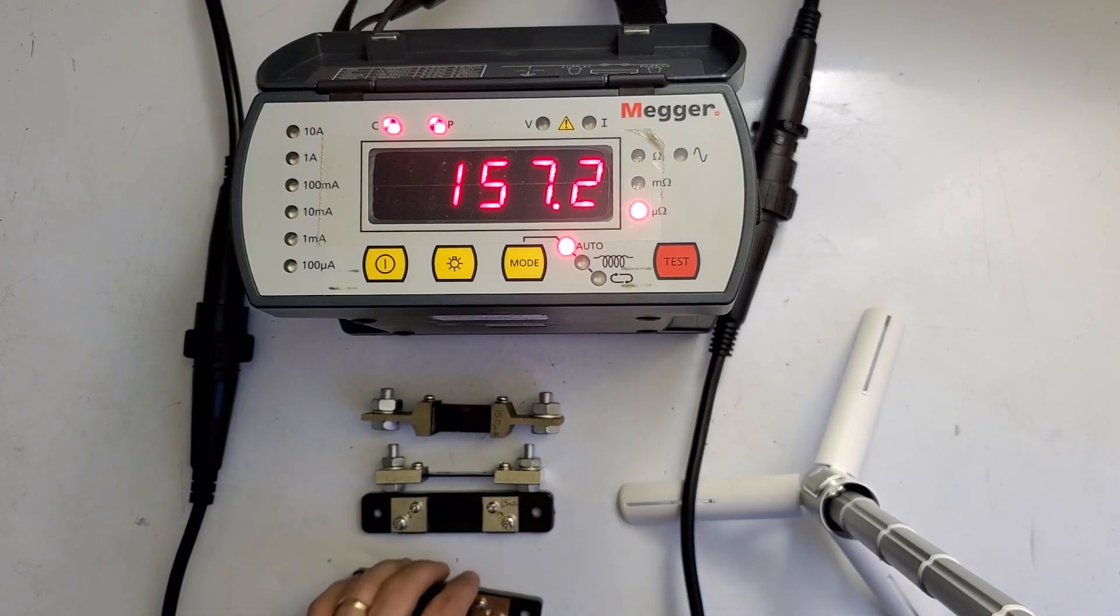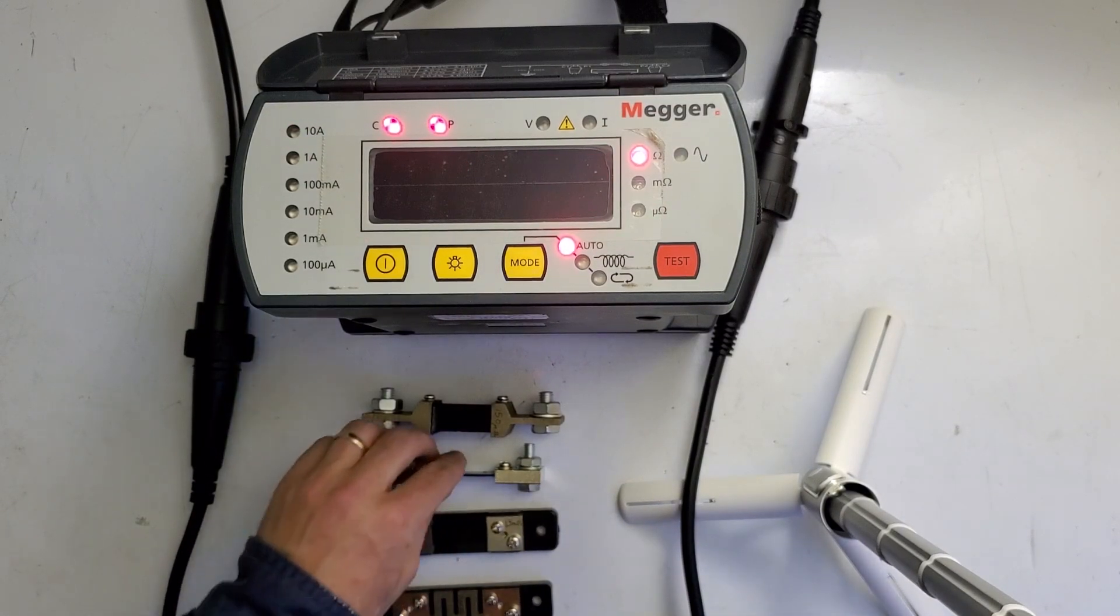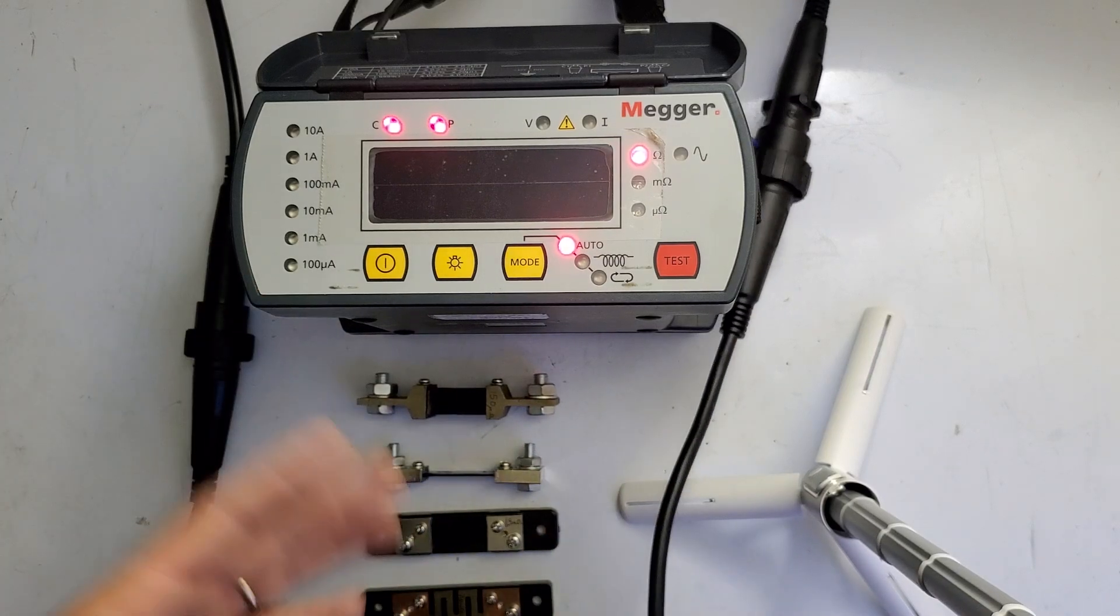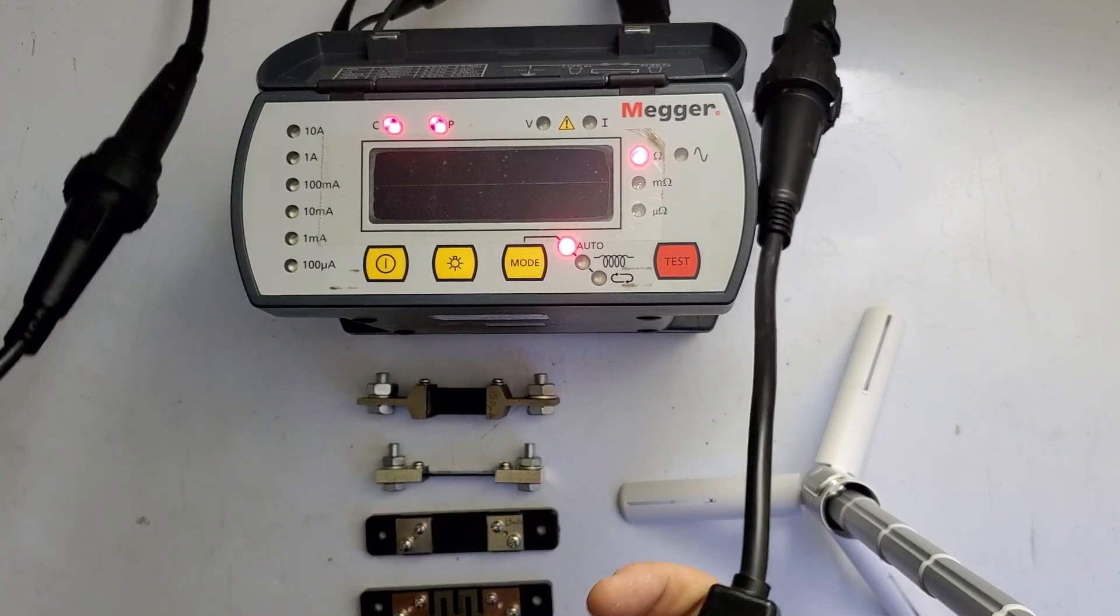All right guys, today I want to do another demonstration on what to expect and how to do self-checks for your equipment. This is a Megger DLRO 10. Any DLRO will work, but I'm using a 10 with the standard manufacturer leads. I have it set to auto.